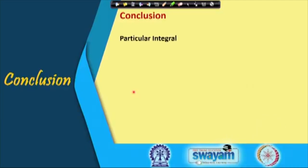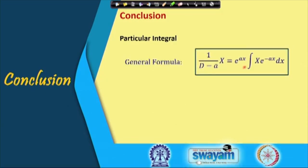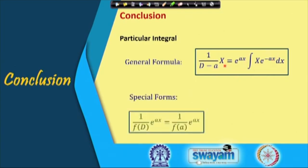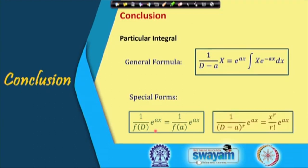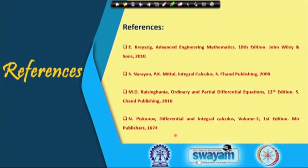In conclusion, we have seen the particular integral using the general integral formula [1/(D−a)]X = e^(ax)∫X·e^(−ax)dx, which can be used in any case as long as the integral can be evaluated. We also discussed the special form X = e^(ax): replace D by a if f(a) ≠ 0, or use the (x^r/r!)·e^(ax) formula if f(a) = 0 with a repeated factor (D−a)^r. Thank you for your attention.